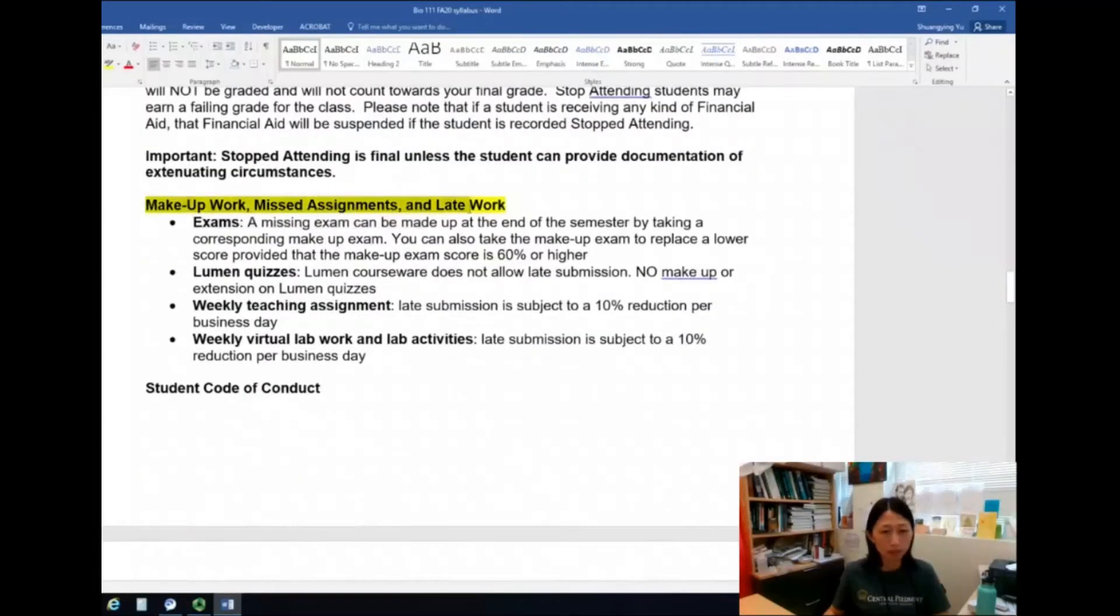This section is also important. Make-up work, missed assignments, late work. For exams, if you miss an exam, that's totally okay because you will have an opportunity to make up that exam at the end of the semester. You can also take the make-up exam to replace a lower score. So for example, your first exam, the first time you take it, you got 60% and you are not very happy with the grade. So at the end of the semester, you can take the make-up exam for number one. And then if you get a better score, the score has to be a passing score, meaning it's 60% or higher.